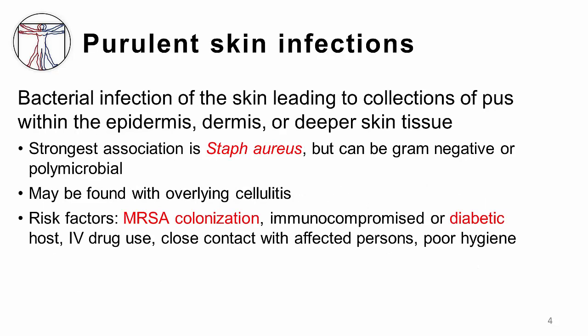Purulent skin infections may involve the epidermis, dermis, or hypodermis, along with associated structures such as hair follicles. The single most common inciting organism in skin infections that involve pus is Staph aureus. However, purulent infections can sometimes be caused by other organisms, or they may be polymicrobial, meaning that more than one organism is involved in the infection.